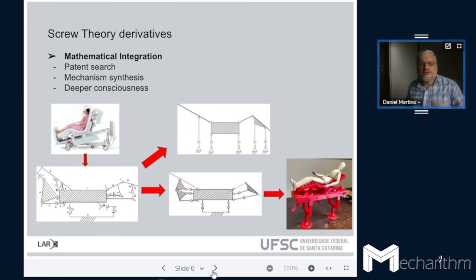Well, all the derivatives of screw theory is this deeper consciousness that you have of what we are really designing. So for designing a new robot, a new mechanism, you have to have such a kind of deeper perception of the reality in order to not over-constrain and not have loose parts.